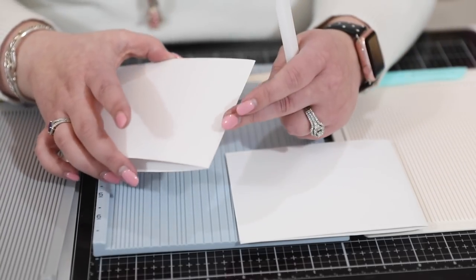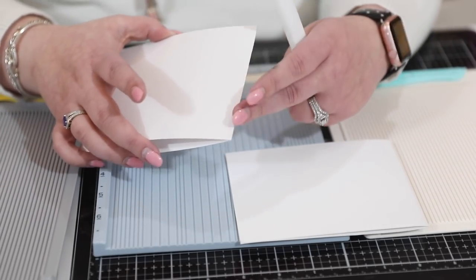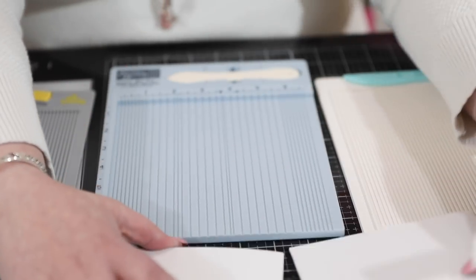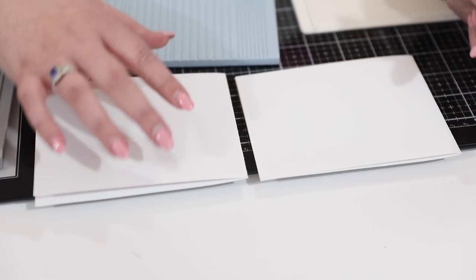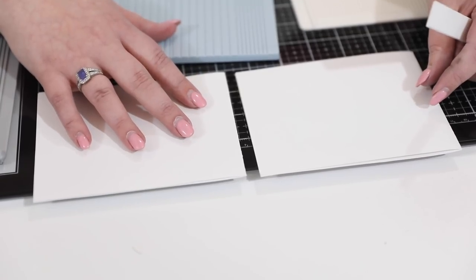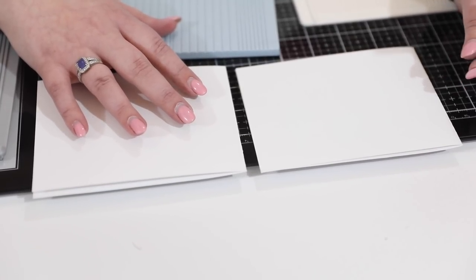This is what I did with a scoreboard and I have a really nice crisp fold down the edge. The other thing you'll notice is if I put them down like this, the one that I did with the scoreboard will sit much flatter than the one that I did without. So those are the differences between them.